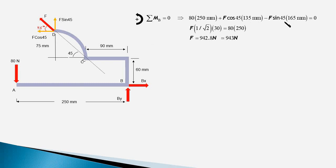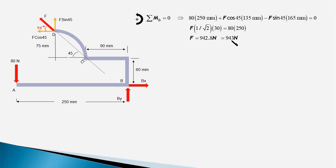The sum of all three moment terms equals zero, and solving this equation yields F equal to 942.8 newtons, rounded to 943 newtons. That is the reaction force at the pin joint D.